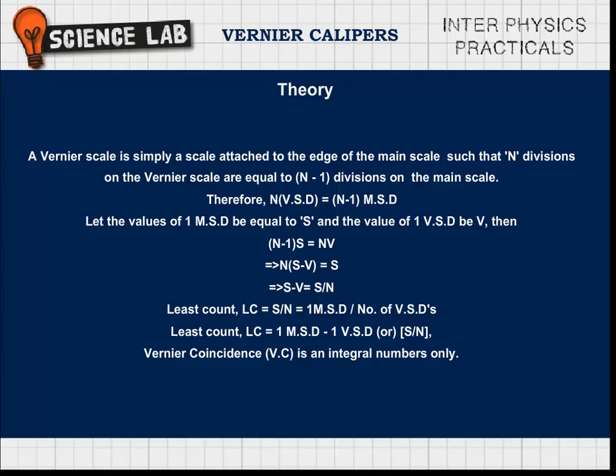least count LC is equal to S by N, which is equal to 1 MSD by number of VSDs. Least count LC is equal to 1 MSD minus 1 VSD, or S by N. Vernier coincidence (VC) is an integral number only.